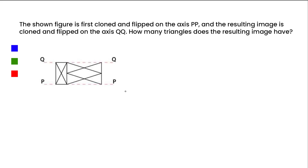First, it was cloned and flipped on the axis PP — it will be flipped just like this. So we will draw this PQ image and then clone it and flip it, so the resultant will look just like this. I'm drawing it so we'll have a clear version of the same.